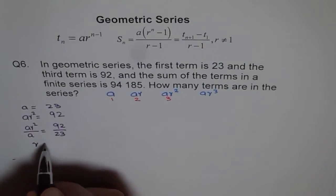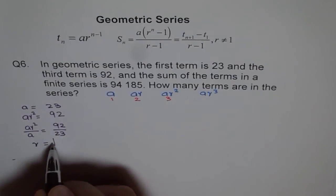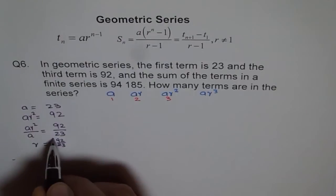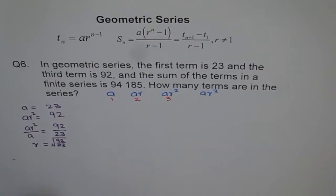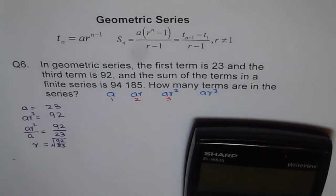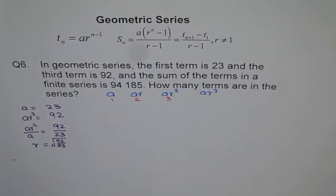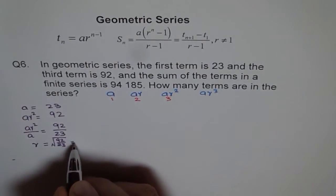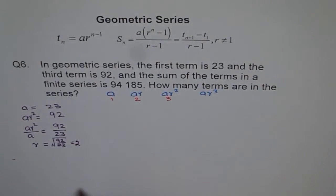So r equals the square root of 92 over 23. We divide 92 by 23, which gives us 4, and the square root of 4 is 2. So we get r equals 2.